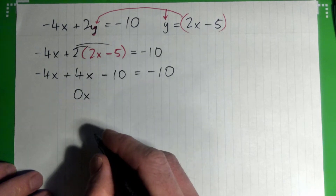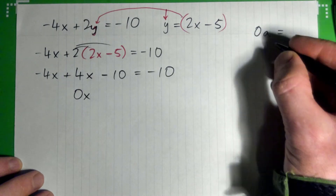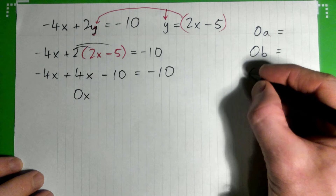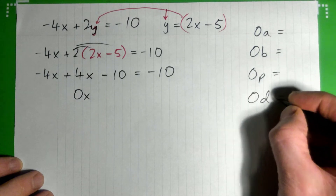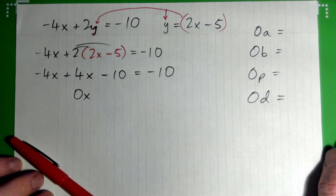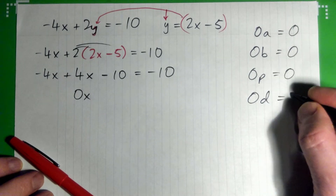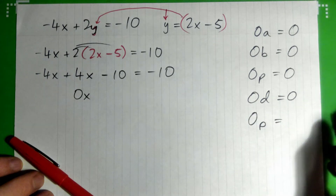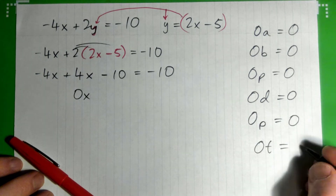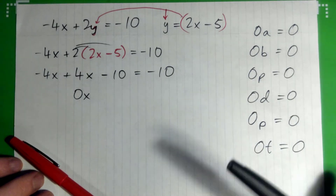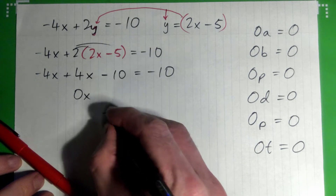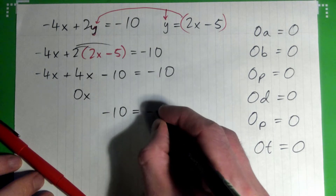It's zero — 0x is just zero, it's gone. Zero apples, zero bananas, zero dollars — it's nothing. So all the x terms disappear, and what we're left with is negative 10 equals negative 10.